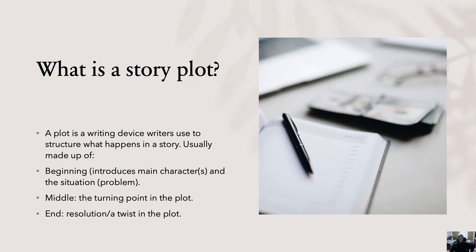Next we have what we call a story plot. A story plot is a writing device writers use to structure what happens in the story. A story is usually made up of three parts. The first part is the beginning, where the main character is introduced and the situation or problem is established. Then we have the middle — the second part of the plot — which entails the turning point, sometimes referred to as the climax. Then the last part, the third part, is the end or conclusion. This is the resolution, or a twist in the plot, sometimes referred to as a sting in the tale.